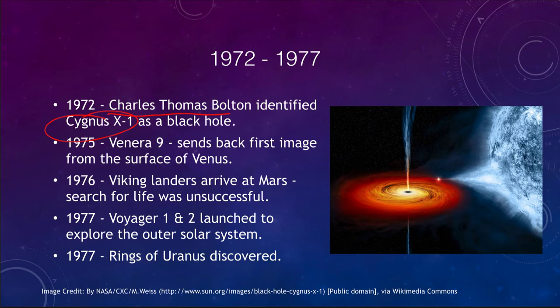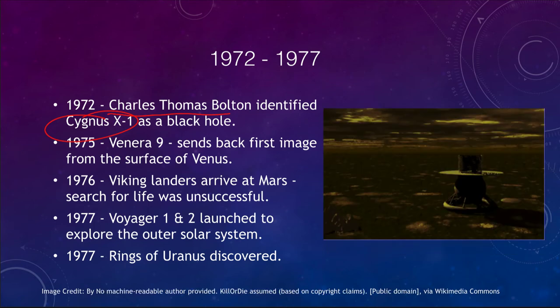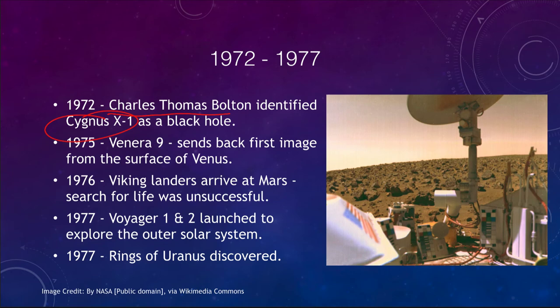A couple of years later in the mid-70s, we got our first images from the surface of Venus — Venera 9 sent back images of the Venusian surface, giving us a chance to see it for the first time since it is constantly shrouded in clouds. The following year, 1976, the Viking landers on Mars explored the planet in detail and began searching for signs of life, though their initial searches were unsuccessful — something we still pursue today.